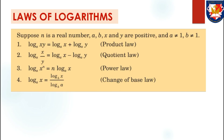To make calculation easier, here are the laws of logarithms. Law 1 (Product Law): logarithm of x times y to the base of a equals logarithm of x to the base of a plus logarithm of y to the base of a. Law 2 (Quotient Law): logarithm of x over y to the base of a equals logarithm of x to the base of a minus logarithm of y to the base of a. Law 3 (Power Law): logarithm of x to the power of n to the base of a equals n times logarithm of x to the base of a. Law 4 (Change of Base): logarithm of x to the base of a equals logarithm of x to the base of b over logarithm of a to the base of b.